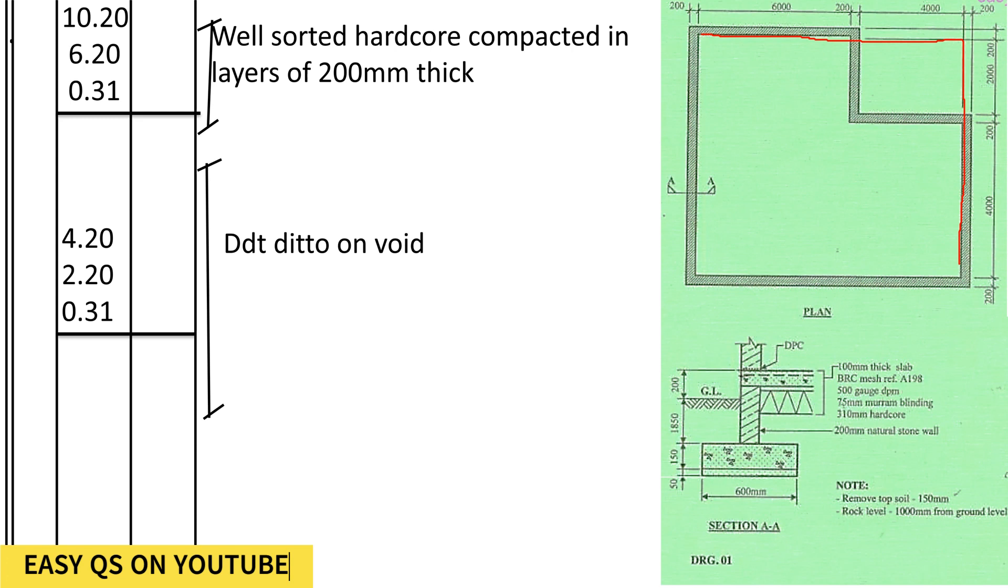Then we shall deduct for the void. So the length, we shall take it internal dimensions. It will be 6000 plus 200 plus 4000, it shall be 10,200. Then the width shall be 2000